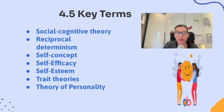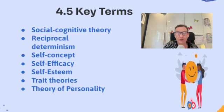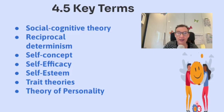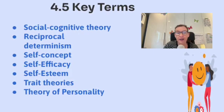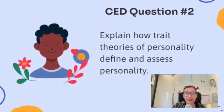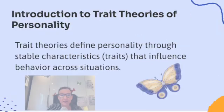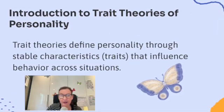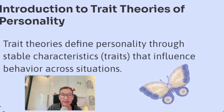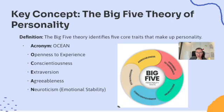In this slide, you're going to see all the key terms for 4.5 for both CED questions. I usually do a separate video for those with definitions and real-life examples to help you define and apply them on test day. The CED question we're going to look at is: explain how trait theories of personality define and assess personality. As an introduction, trait theories define personality through stable characteristics — traits that influence behavior across situations.